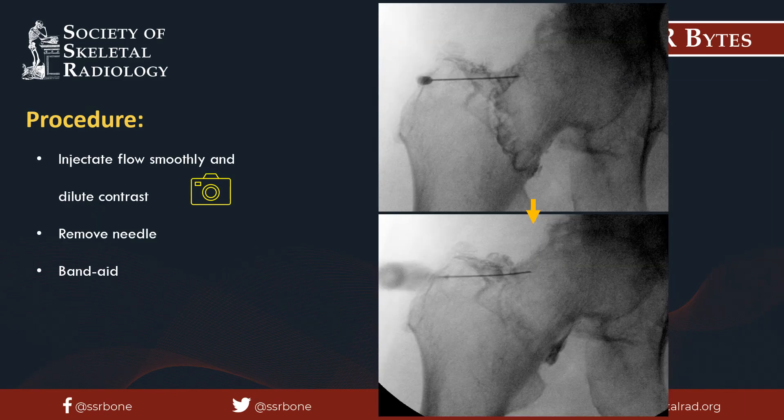Once intra-articular placement is confirmed with contrast, the contrast can be exchanged for the injectate. When you inject this solution, the contrast will dilute and dissipate — the top image demonstrates the initial administration of contrast, and the lower image demonstrates injection of the injectate solution with dilution of the contrast. Once the injection is complete, the needle is removed and a band-aid is applied.